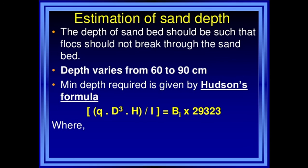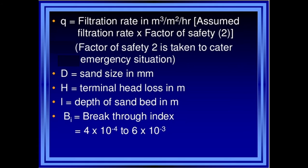Depth varies between 60 to 90 centimeters. The minimum depth required is given by Hudson's formula: Q × D³ × H divided by L = Bi × 29,323. Here Q equals filtration rate in liters per square meter per hour, with a factor of safety taken to cater for emergency situations. D equals sand size in mm, H equals terminal head loss in meters, L equals depth of sand bed in meters, and Bi equals breakthrough index, ranging from 4×10⁻⁴ to 6×10⁻³.